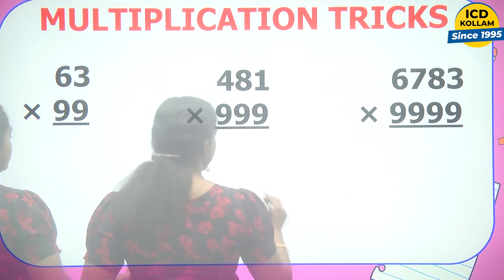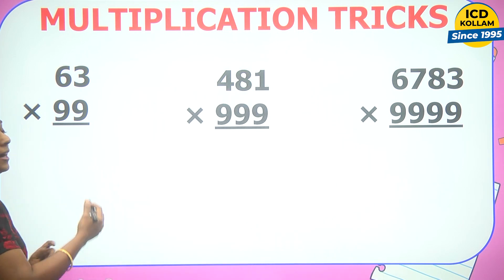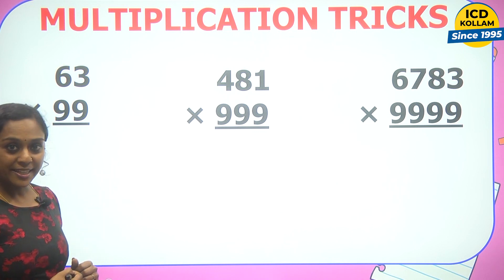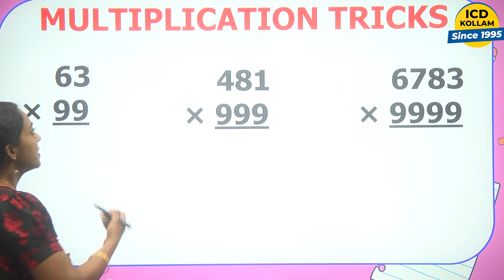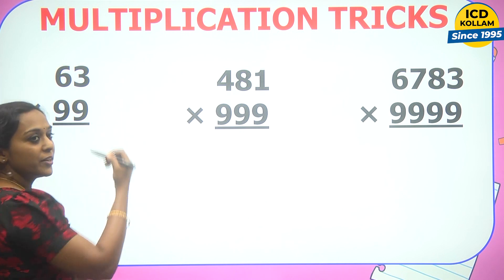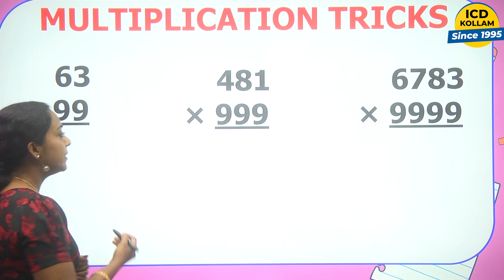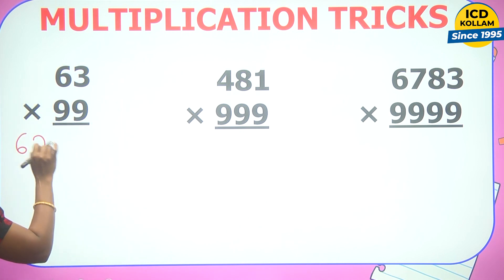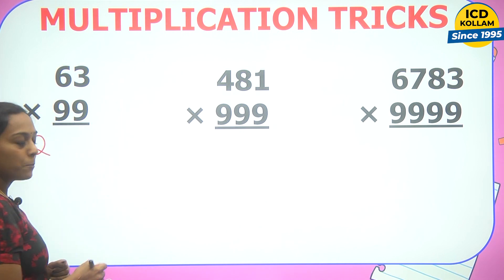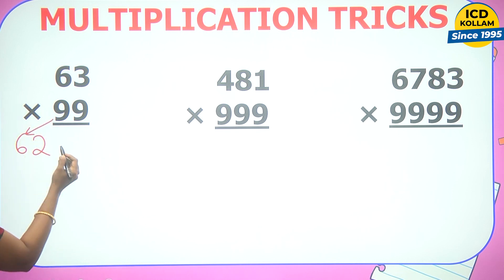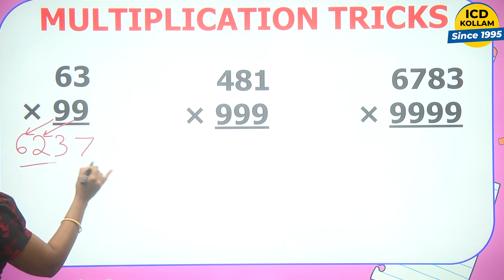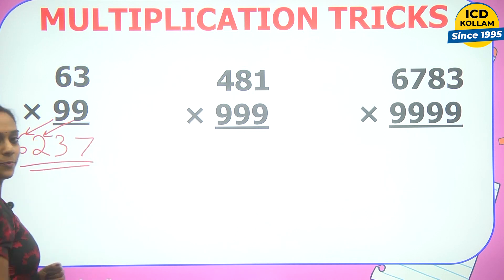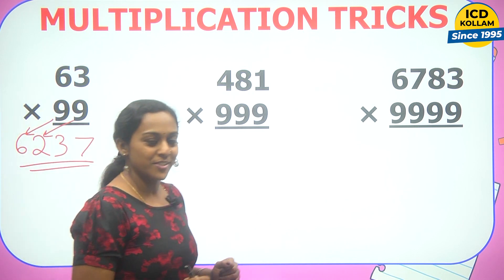First question: 623 into 99. Both numbers have three digits. Step one: 623 minus 1 equals 622. Step two: 9 minus 6 equals 3, then 9 minus 2 equals 7. So the answer is 62237.